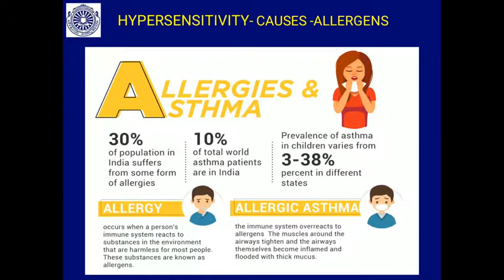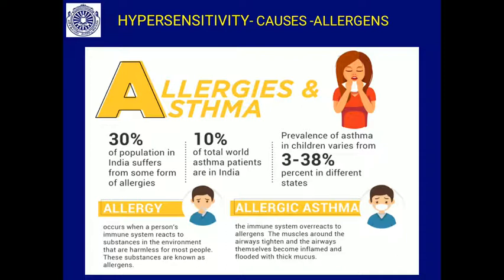Allergy occurs when a person's immune system reacts to a substance in the environment that is harmless for most people. Allergens are harmless to most individuals but cause allergic reactions and harm in some. In allergic asthma, the immune system overreacts to allergens: the muscles around the airways tighten, the airways in the lungs become inflamed and flooded with thick mucus, blocking breathing and causing wheezing.